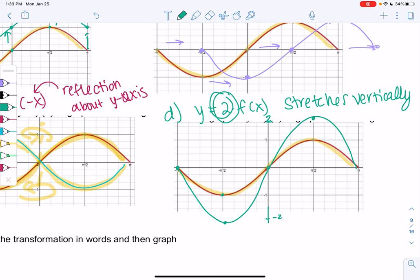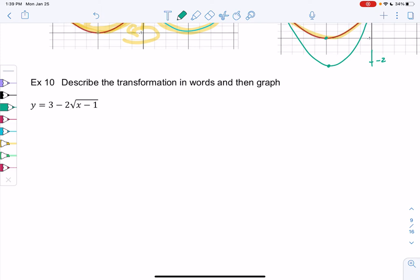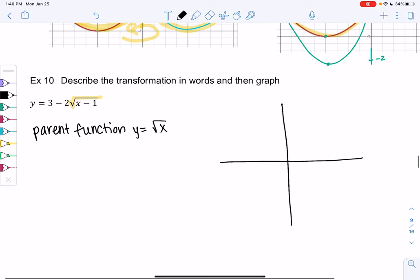Let's try example 10 to finish up the section. So now let's just describe a transformation in words and then graph. So let's describe it in words and then we'll graph it. So first I like to identify the parent function. So we have y equals 3 minus 2 square root of x minus 1. So I think that square root is my function, right? So first we start with the parent function, which is y equals square root of x. So if I were to graph, as I graph this, that'll be step 1. The square root of x just starts at 0 and kind of slowly curves up.